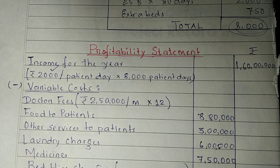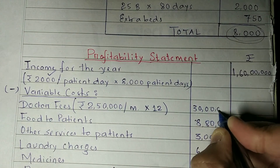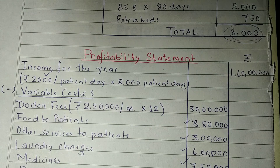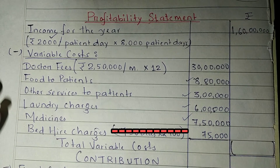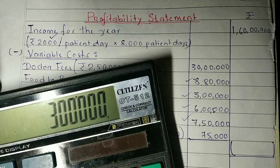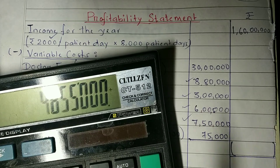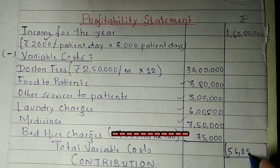Now we calculate variable costs. Doctors' fees: ₹2,50,000 per month × 12 = ₹30,00,000. Then food to patients, other services to patients, laundry charges, and medicines — all given in the question. Bed hiring charges for extra beds: ₹75,000. Adding all variable costs: ₹30,00,000 + ₹88,000 + ₹6,75,000 + ₹750 = Total Variable Cost ₹56,05,000. Contribution = Income minus Variable Cost = ₹1,39,5,000 approximately.